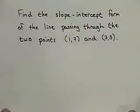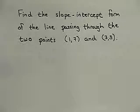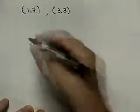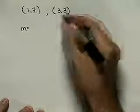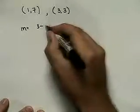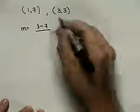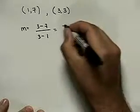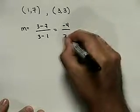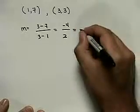Let's look at an example using the point-slope form. Here we're asked to find the slope-intercept form of a line passing through the two points (1, 7) and (3, 3). We need to start by finding the slope, which is the change in y over the change in x: y2 minus y1 over x2 minus x1, which is 3 minus 7 over 3 minus 1. So 3 minus 7 is negative 4, and 3 minus 1 is 2, giving us a slope of negative 2.